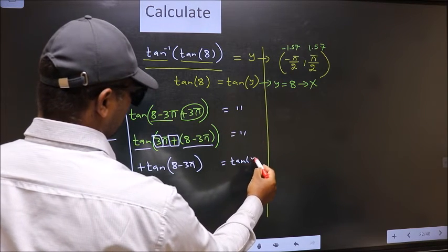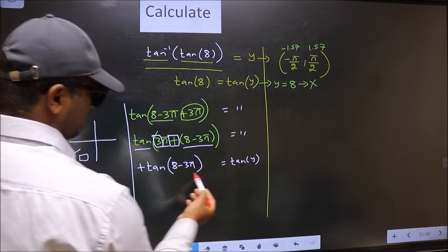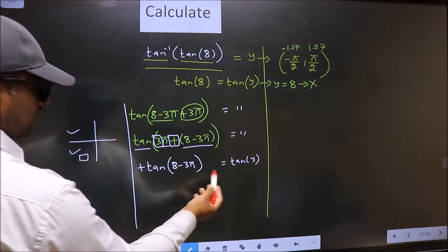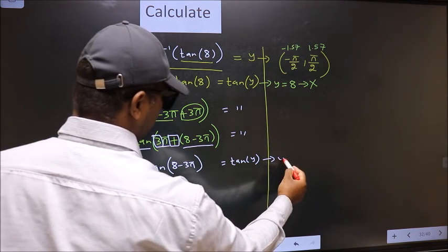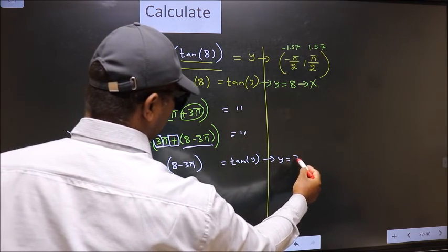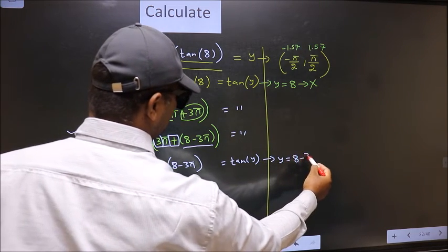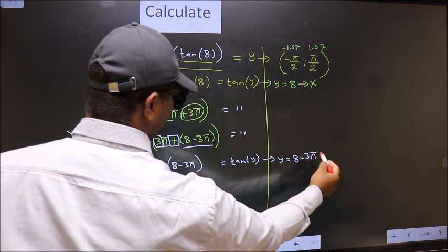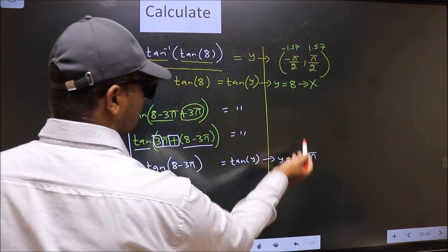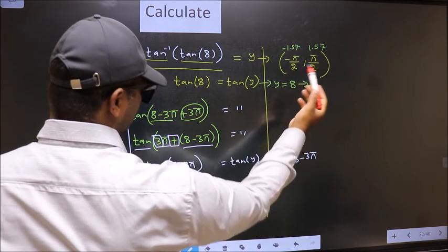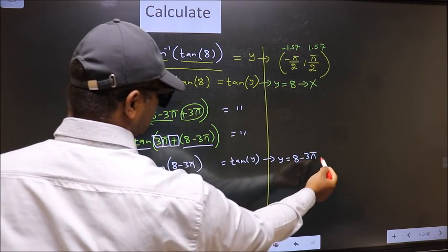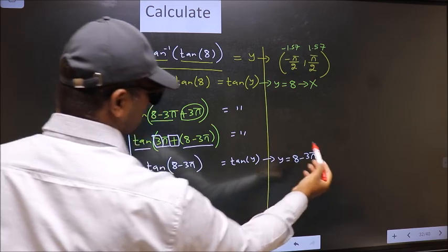On the other side no change — equal to tan y. Now comparing both sides, we get y to be 8 minus 3 pi. Does this lie in this interval? Yes. So this is our answer.